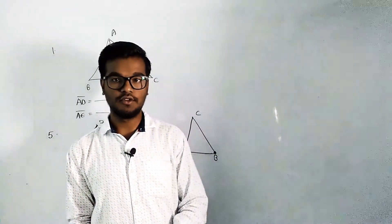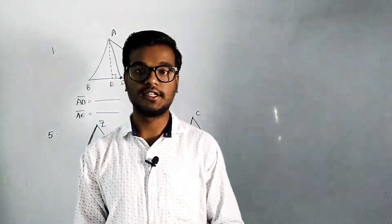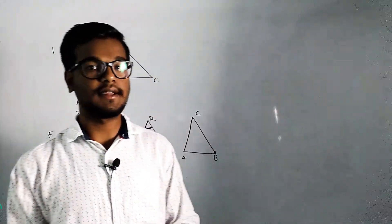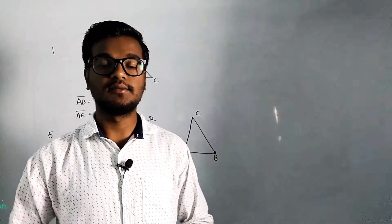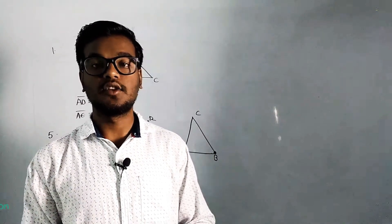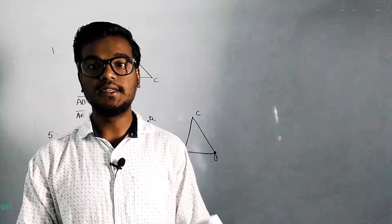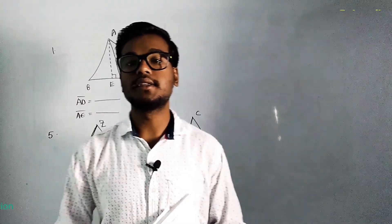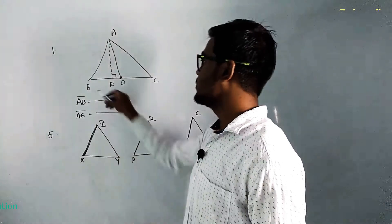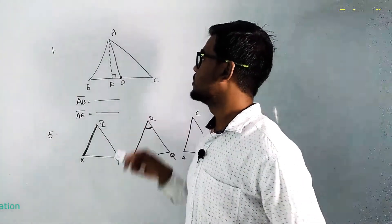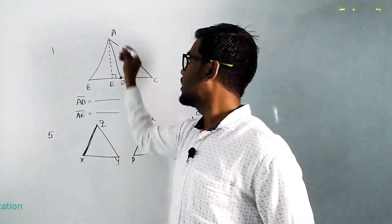In this module we are going to discuss the solutions for Exercise 2 in Triangles and its Properties. Our first question is about triangle ABC where two lines are given.